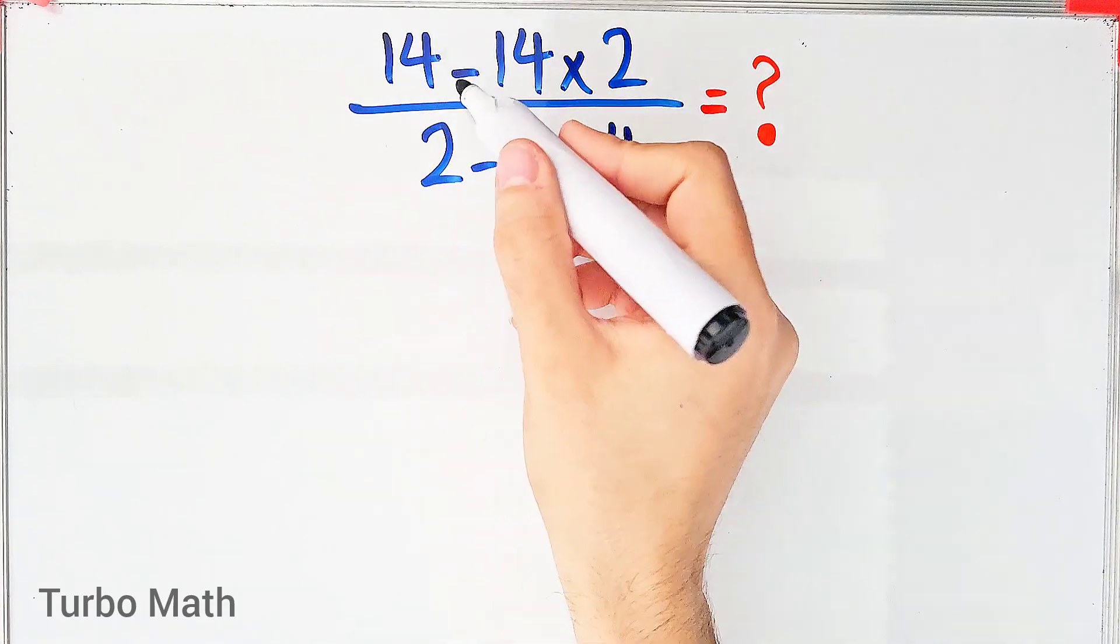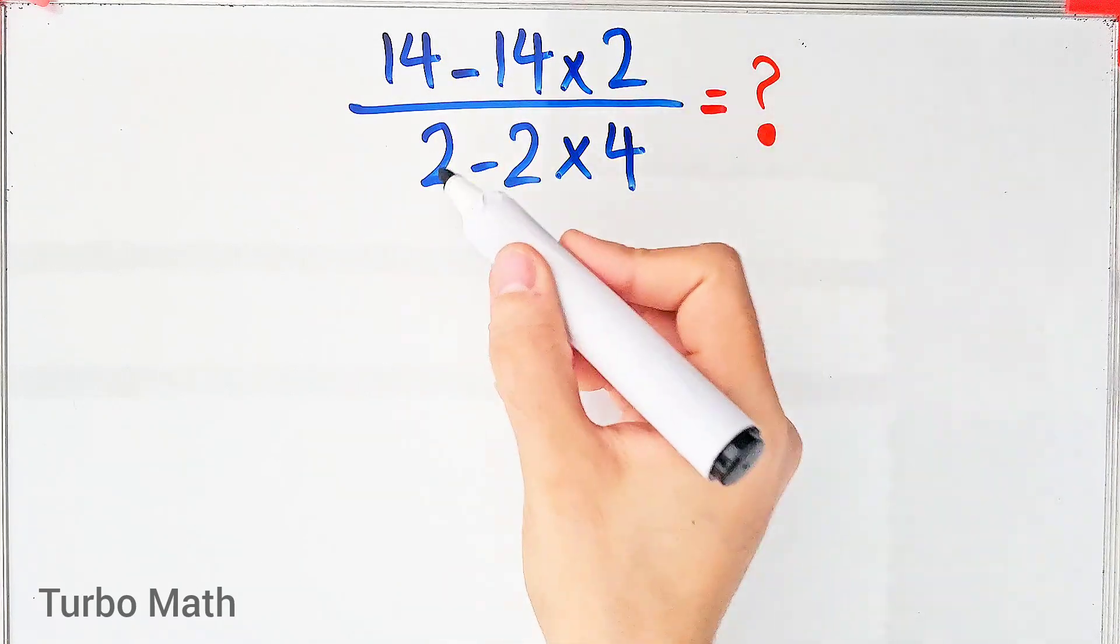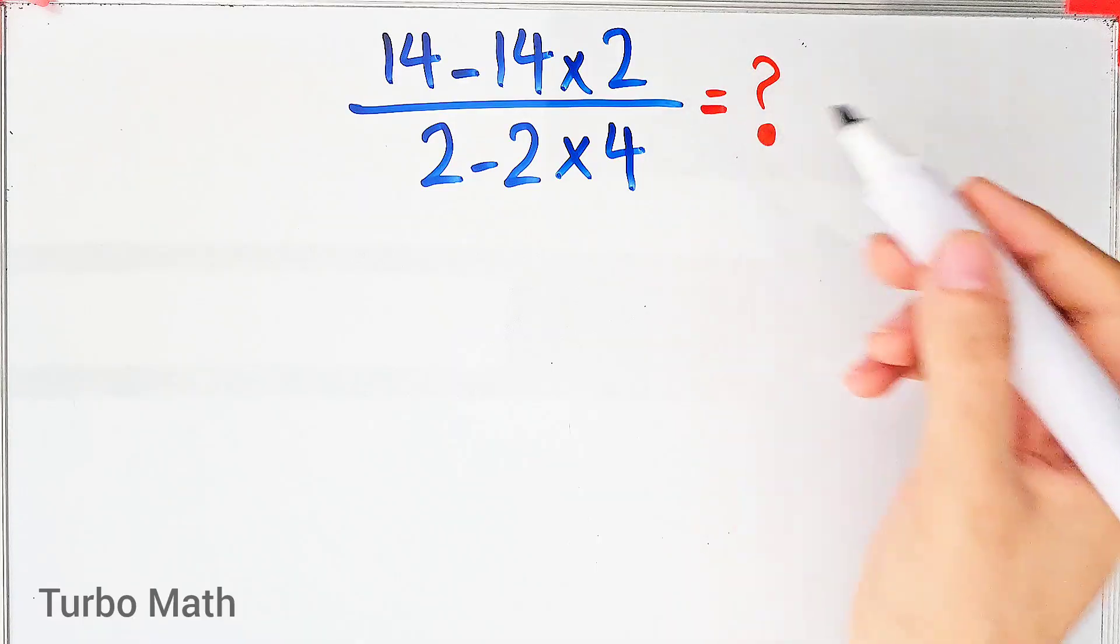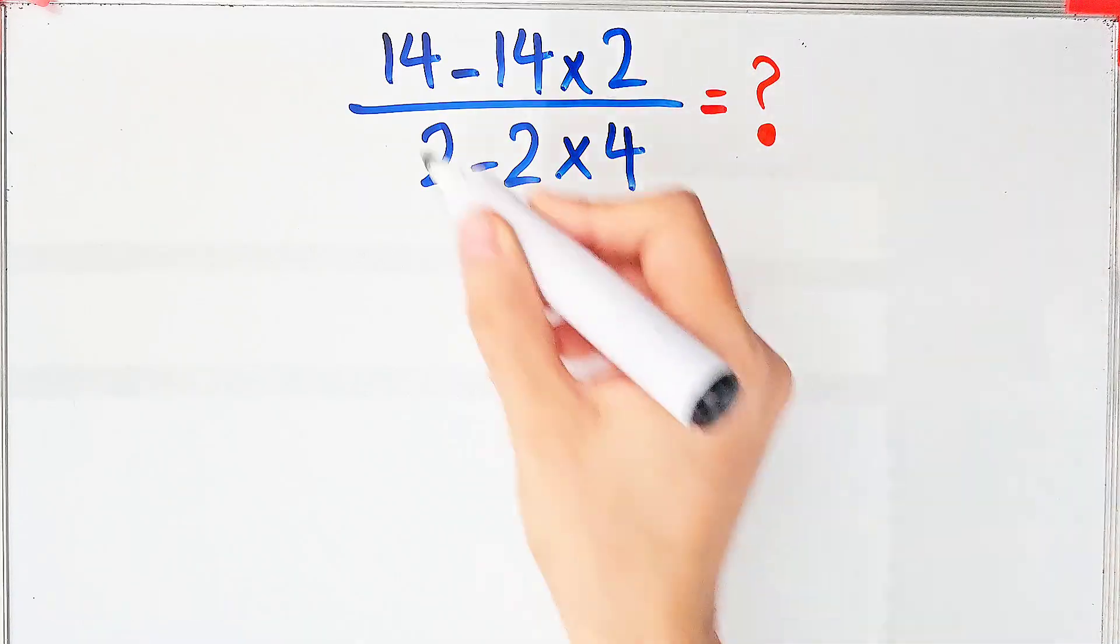14 minus 14 times 2, over 2 minus 2 times 4. What is the answer to this question? Can you solve it? To solve this question...